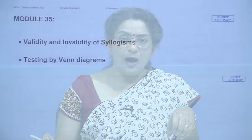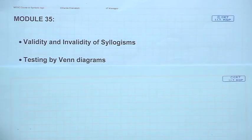Hello, and we are at module 35 of the Symbolic Logic course. We are about to finish this Categorical Logic that we started some 3-4 modules back, so today's module is going to be the end of that Categorical Logic discussion. We have looked into syllogisms in the last module and today we are going to look into how to establish the validity and invalidity of the syllogisms.